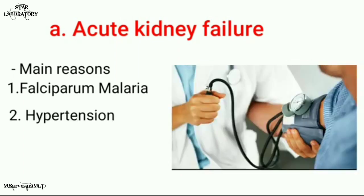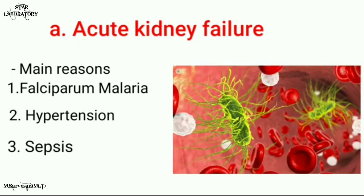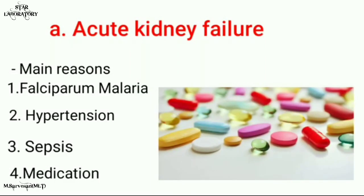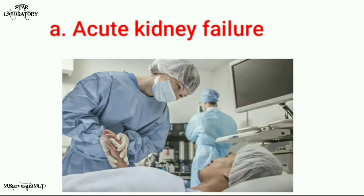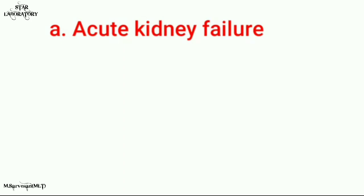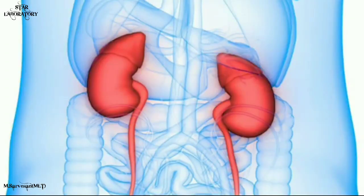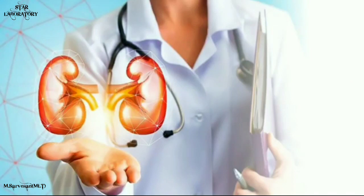The second cause is hypertension — high blood pressure can also lead to acute kidney failure. The third is sepsis or blood infection. The fourth is medication: if you consume too many tablets in high doses, it will lead to kidney failure. So be smart — don't take any medicines without a doctor's prescription. Acute kidney failure can be cured with successful treatment; some patients have to undergo peritoneal dialysis or hemodialysis, and after a few days they can recover. But if you fail to get proper treatment, the kidneys may lose their functions permanently. So if you notice these symptoms, please don't delay — meet a doctor and get proper treatment.